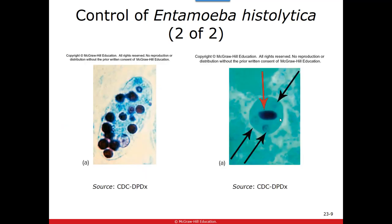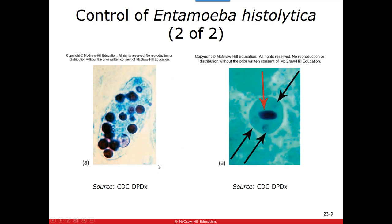To diagnose Entamoeba histolytica, they perform a fecal smear looking for either the cyst stage or the motile trophozoite stage. Treatment involves antiprotozoan drugs. On the fecal smear, a large trophozoite is visible as a single cell — the oozing stage — and it feeds on red blood cells, which is why you see a dark reddish pigment. The cyst form shows little nuclei visible as small black circles. They're looking for either the infective cyst stage or the trophozoite stage.